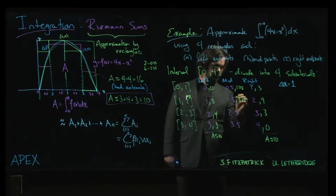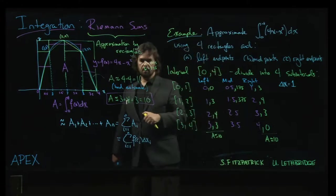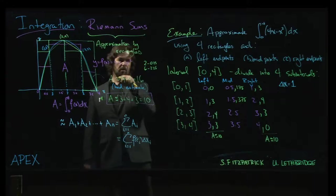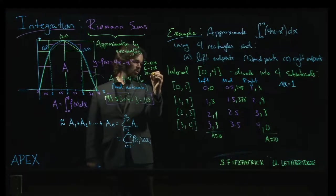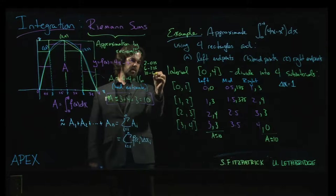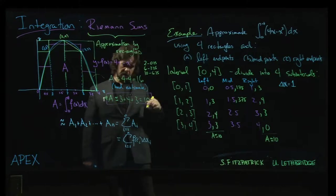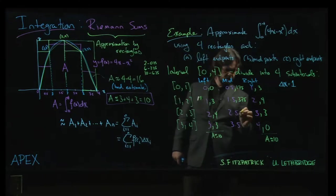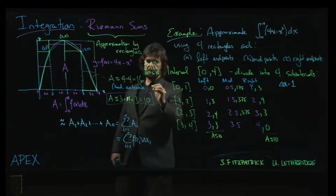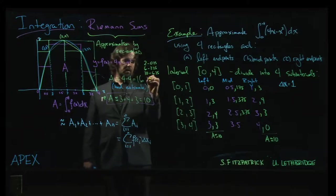Then 4 times 2.5 is going to be 10, and 2.5 squared is I believe 6.25, so this is going to be again 3.75.